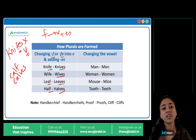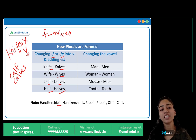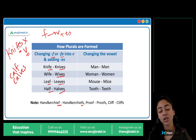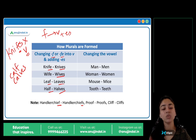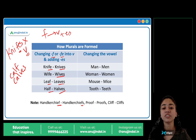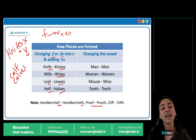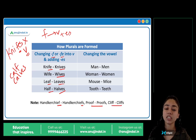Lekin some words mein nahi hota change. In some words jaise handkerchief — yaha pe bhi F hai, lekin yeh change nahi hota, yeh F hi rehta hai plural mein bhi — handkerchief → handkerchiefs, not handkerchieves. Yaha pe F does not change into V. Kuch exceptions hai — jaise proof → proofs, not proves. Cliff → cliffs.